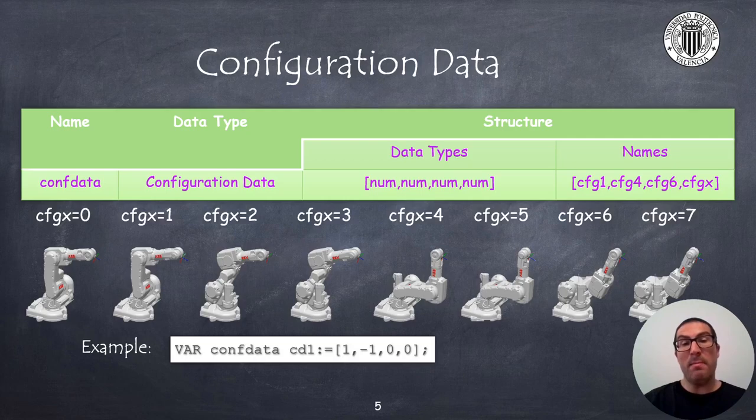As you may guess, there might be ambiguous values. That is, the number zero and the value minus four actually represent the same quadrant, and the number one and minus three, exactly the same. In addition, CONF data also includes a fourth value, CFGX, that allows you to define the configuration of the robot with a number from zero to seven. Here I show the eight possible configurations of an IRB-140 robot.